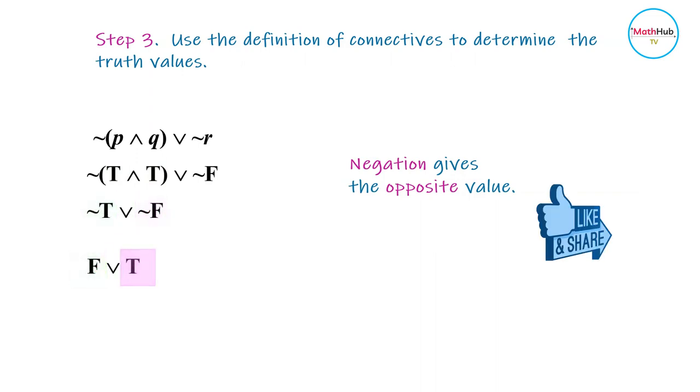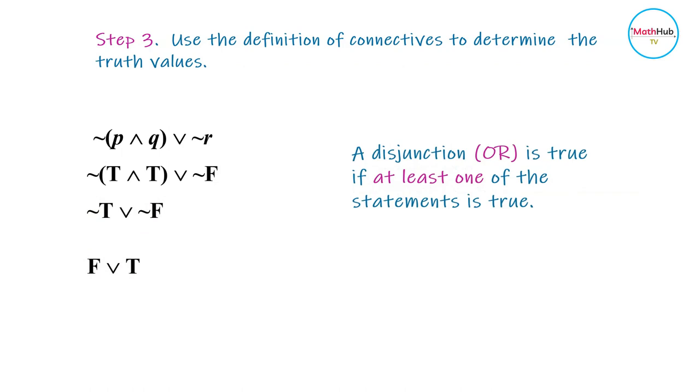Then you're left with false or true. For a disjunction, an OR statement, the statement is true if one of the statements is true. We have false and true, so one of the statements is true. Therefore, the statement is true.